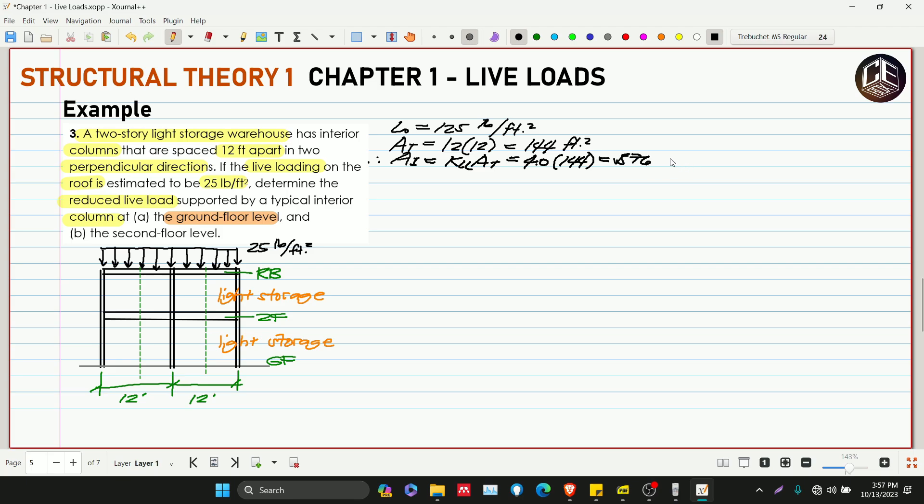Therefore, ang ating influence area is equivalent to KLL multiplied by AT. Interior column to, so this is 4.0 multiplied by 144, so 576 feet squared, which is greater than 400 feet squared. So therefore we need to reduce L-not.